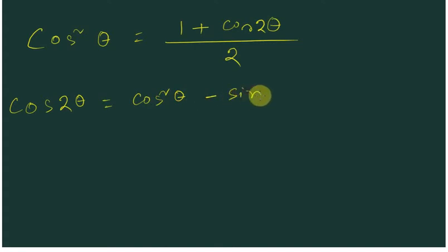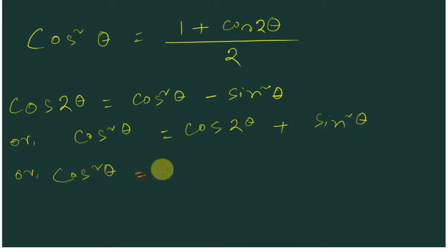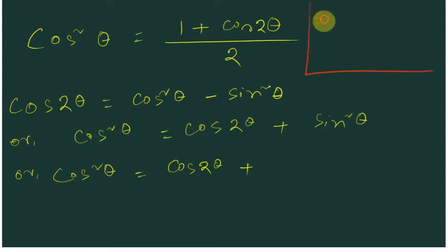...minus sin squared theta. So we can write cos squared theta is equal to cos 2 theta plus sin squared theta. We know that cos squared theta plus sin squared theta equals 1, so sin squared theta is equal to 1 minus cos squared theta.